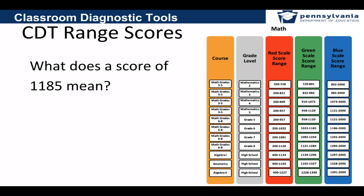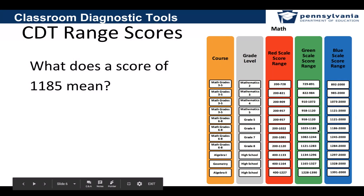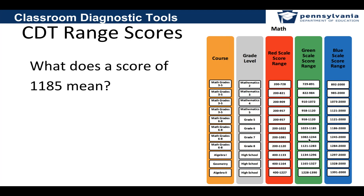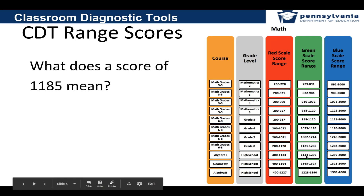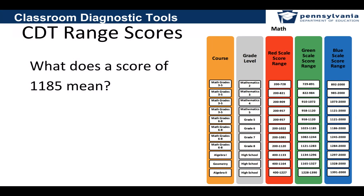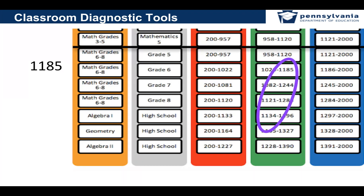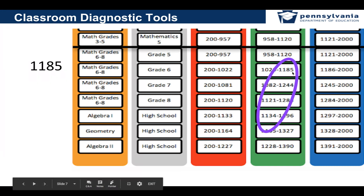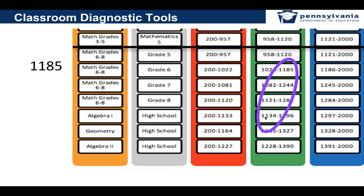Let's look at a specific score. What does a score of 1185 mean? For sixth grade math, 1185 means end of course expectation. If I look at grade 7, 1185 moves a little to the left on the scale but is still in the green. For eighth grade, 1185 still falls in the green range but is moving down to the left of that range. For Algebra 1, 1185 is still in the green range but continues moving to the left. I've drawn a diagonal to show that movement — as you progress through more difficult content, 1185 moves further down into the green range.